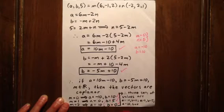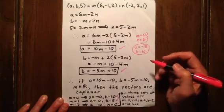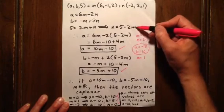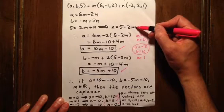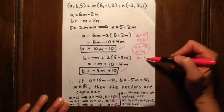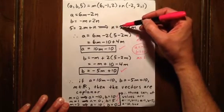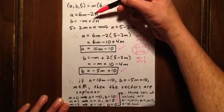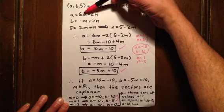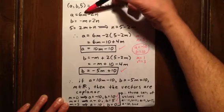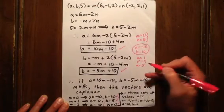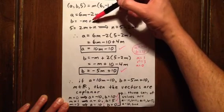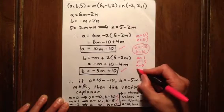Now suppose we let M equal 1. We're assigning a value to one variable so we can solve for the other three. If M equals 1, then N is 5 minus 2 times 1, which is 3. Going back to solve for A and B: A is 6 times 1 minus 2 times 3, which is 6 minus 6, so A is 0. And B is negative 1 plus 2 times 3, which is negative 1 plus 6, so B is 5. So if A is 0, B is 5.